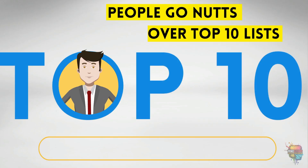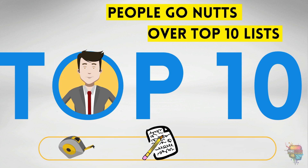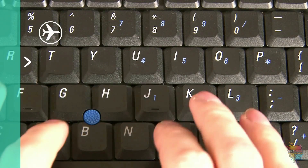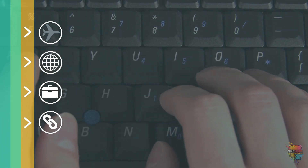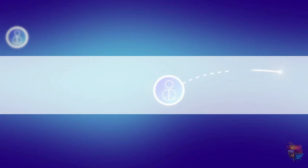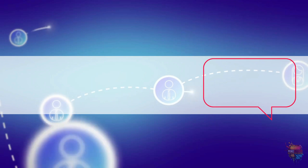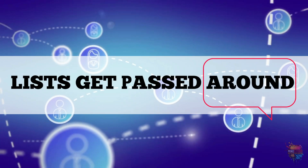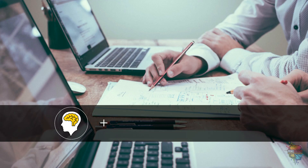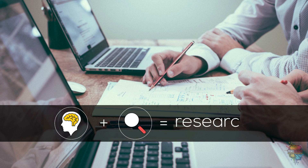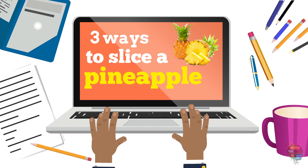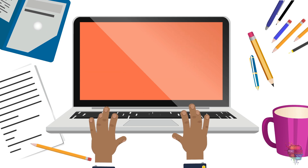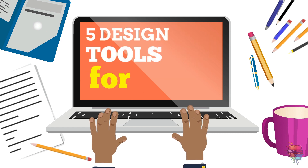People go nuts over top 10 lists — top 10 tools, top 10 blogs, you name it. You can create your own top 10 blogger article or YouTube video as a list. It's super easy to do and it'll get passed around the internet. Creating a list article is easy and it's just a matter of research — something like '3 ways to slice a pineapple' or '5 design tools you'll need in 2020.'